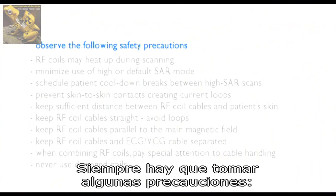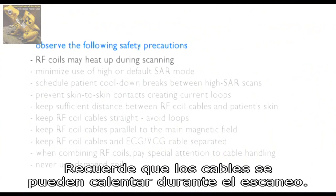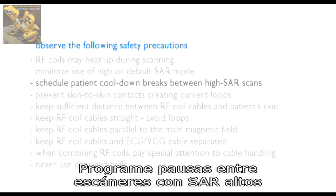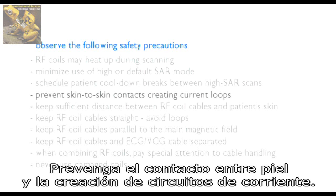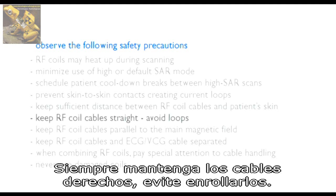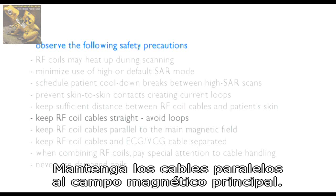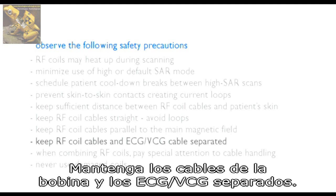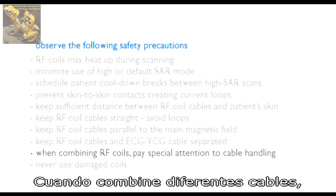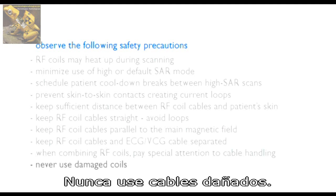Some safety precautions should always be observed: Remember that RF coils may heat up during scanning. Minimize the use of high or default SAR mode. Schedule patient cool-down breaks between high SAR scans. Prevent skin-to-skin contacts that create current loops. Keep sufficient distance between RF coil cables and the patient's skin. Keep RF coil cables straight and avoid loops. Keep RF coil cables parallel to the main magnetic field. Keep RF coil cables and ECG/VCG cables separated. When combining RF coils, pay special attention to cable handling. Never use damaged coils.